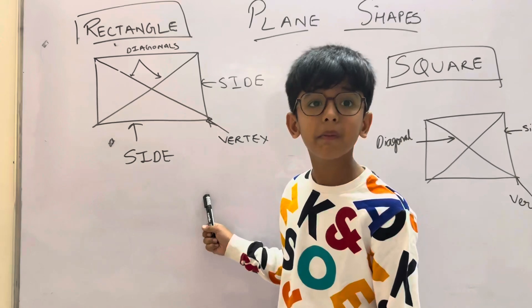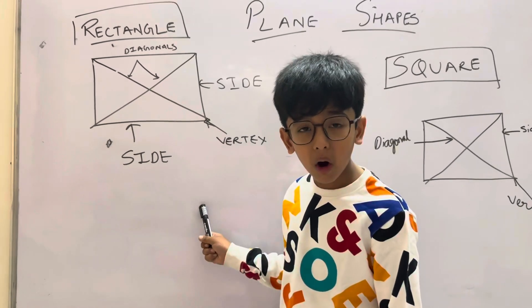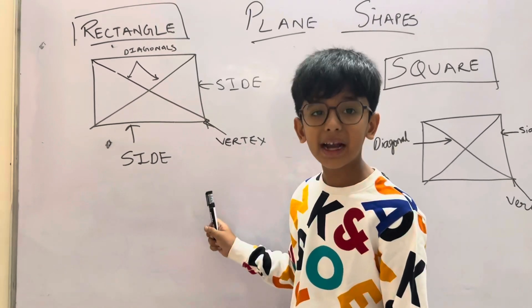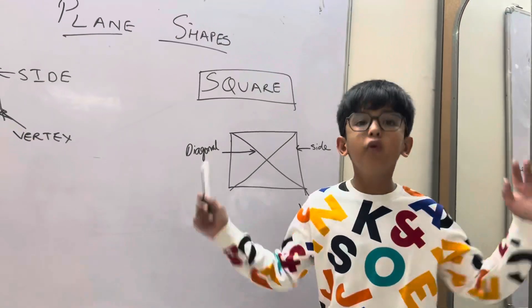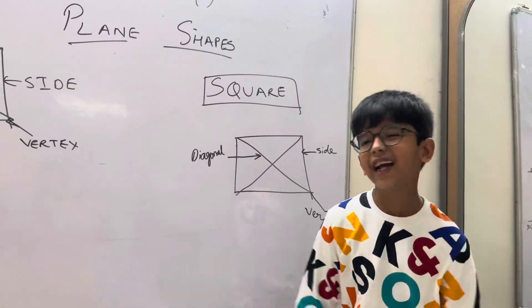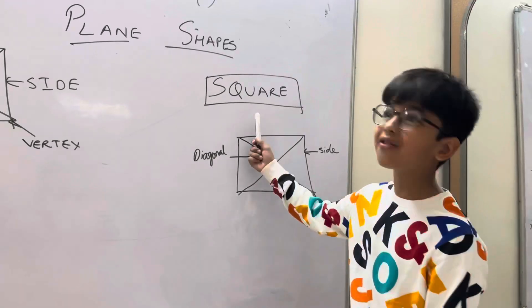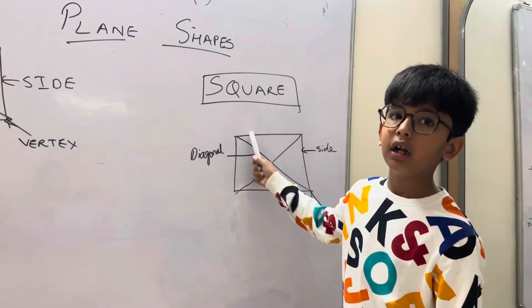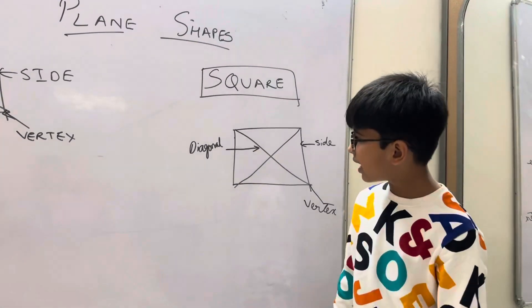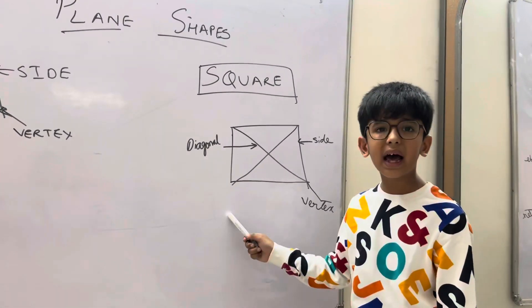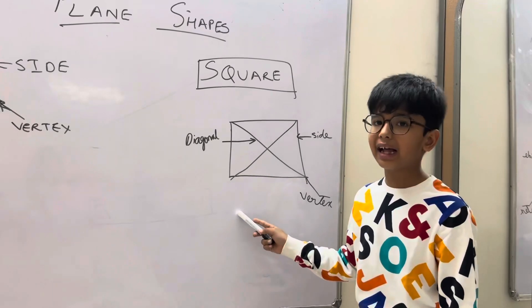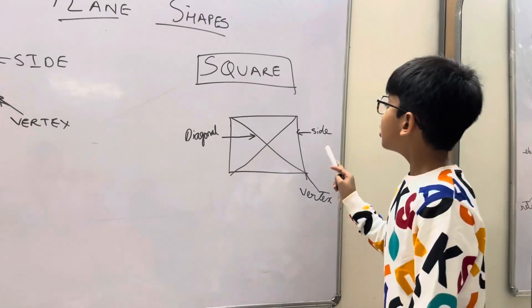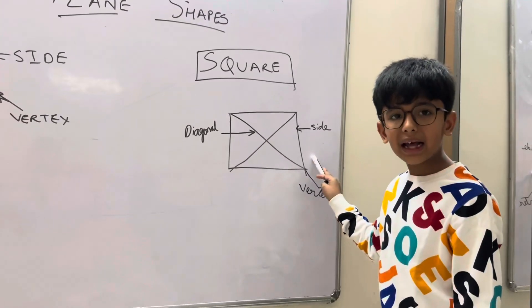Some examples of rectangle are door, blackboard, and envelope. Now for the square: a square has two diagonals of equal length.